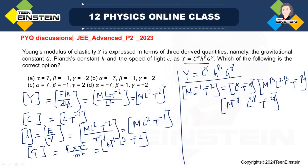Now, if we compare the powers of M, L, and T from both sides, we will get three equations. Comparing the powers of M: beta minus gamma equals 1. From here, beta equals 1 plus gamma. Let us call this equation number 1.